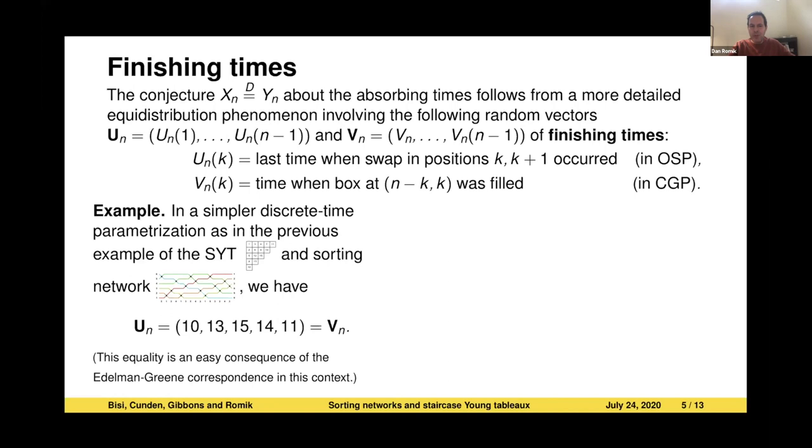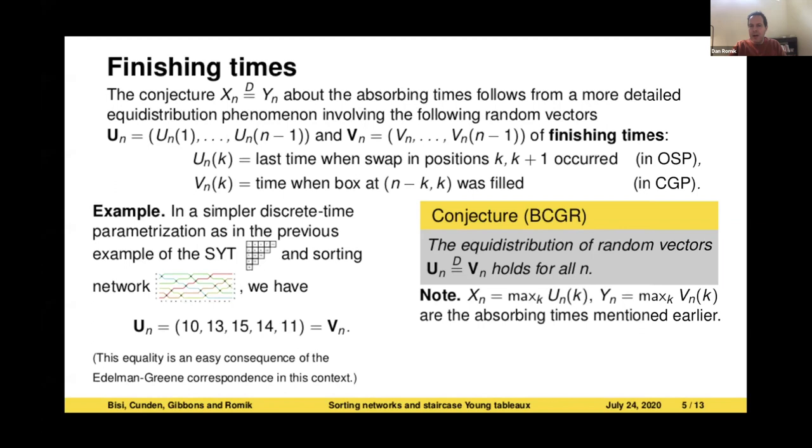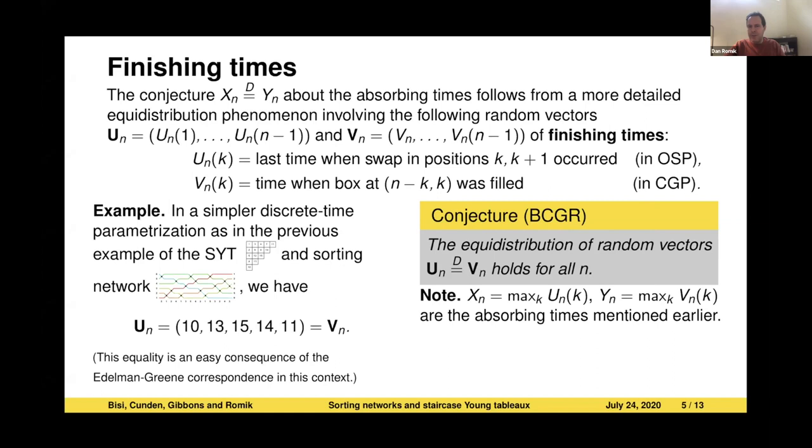The fact that these two vectors are equal is kind of nice. I said that they are related to each other by the Edelman-Green correspondence, and so this is a general phenomenon, that whenever you have a pair of standard Young tableau and sorting network that are related to each other via Edelman-Green, you can check that those two vectors are going to be the same. That's a lemma, but a very easy one. But more interestingly, going back to the continuous time world, which is a more interesting world to think about, we have the following conjecture that for all n, the vectors U_n and V_n, as I define them, are equidistributed, meaning they have the same joint distribution. Note that this implies the original conjecture that I started with about X_n and Y_n, because X_n is the maximum of the coordinates of U_n, and similarly, Y_n, the total time to fill the staircase shape in the corner growth process, will be the maximum of the coordinates of V_n(k).